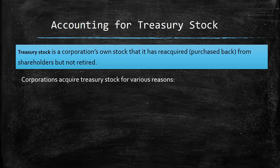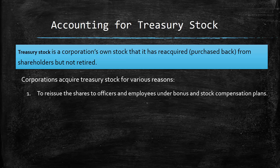There are a number of reasons that corporations will do this. One might be that they need those shares in order to reissue them to officers of the company or even employees under a bonus or a stock compensation plan. Remember, a corporation only has a limited number of authorized shares, and if they've reached that limit but yet they need to issue shares for a bonus or a stock purchase plan for employees, then they have to buy them back from the market in order to reissue them to those people.